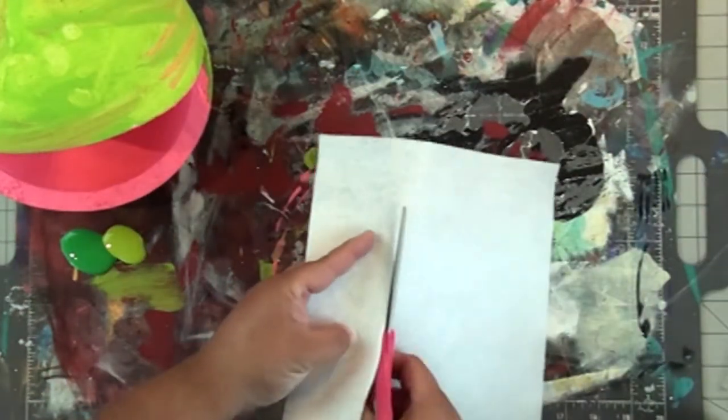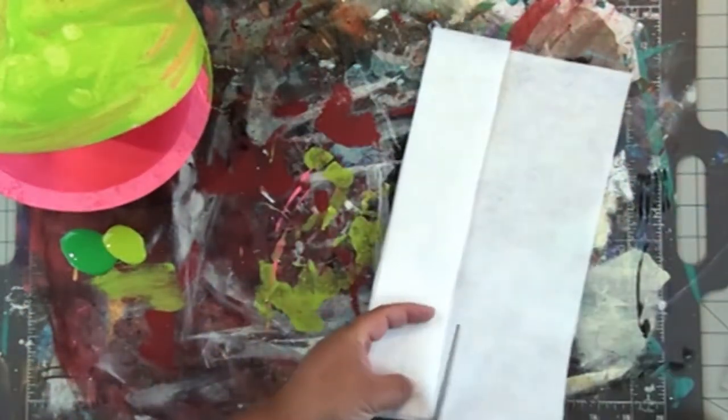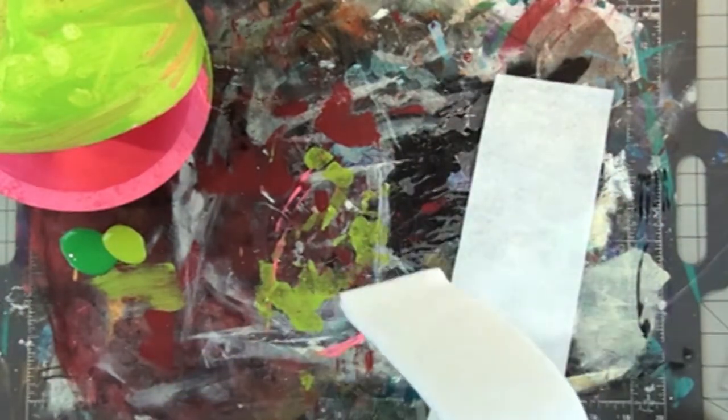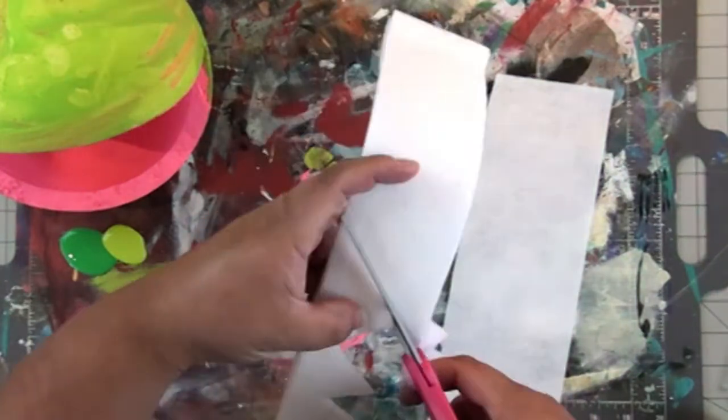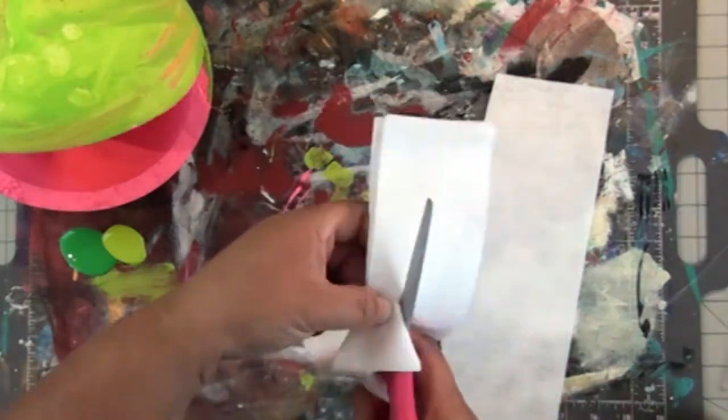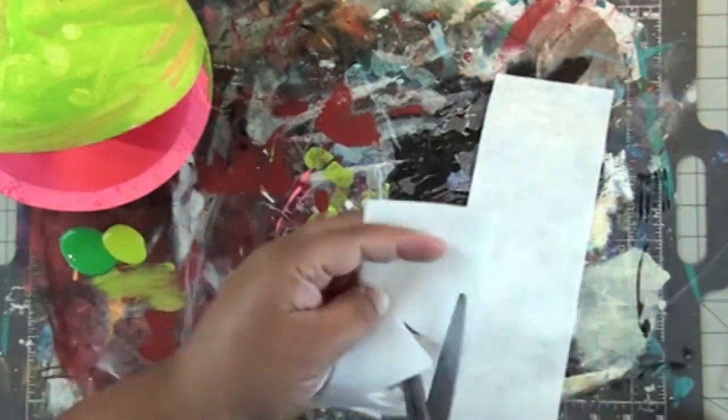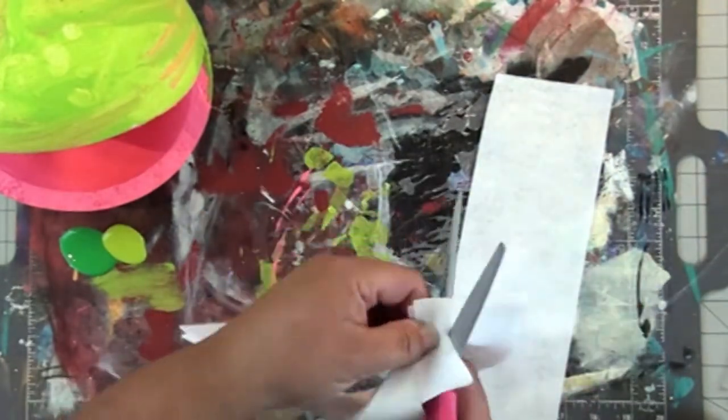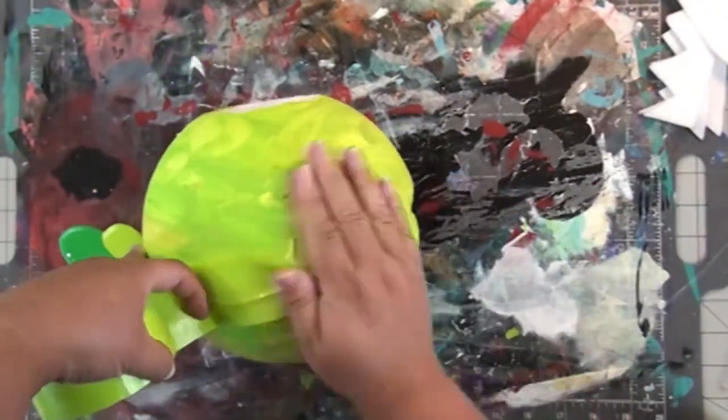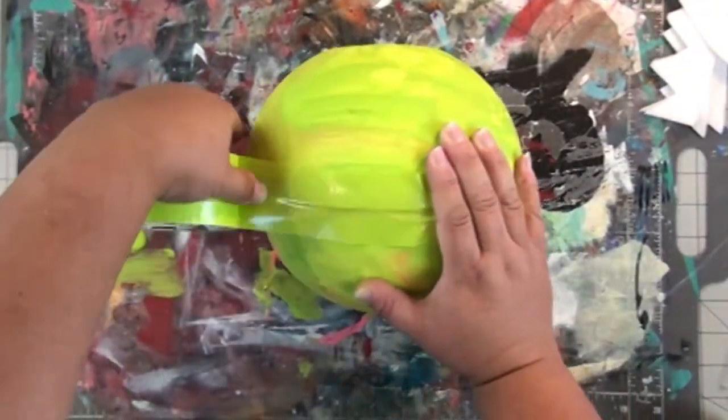Here I'm cutting about a one and a half inch wide strip of more white Kunin felt, a 9 by 12 sheet. I'm using some Wescott nonstick scissors here to cut through two layers of that felt at once to make teeth. I'm just cutting a zigzag pattern and that's going to give me four pieces of teeth that I can use.